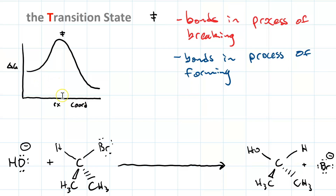This reaction coordinate diagram works for the chemical reaction where a hydroxide ion attacks isopropyl bromide, replacing the bromide to give isopropanol and bromide ion. A lone pair on hydroxide becomes a sigma bond with carbon — that's nucleophilic attack. The sigma bond between carbon and bromine breaks and becomes a lone pair on the bromide ion — that's loss of a leaving group.